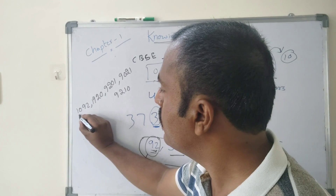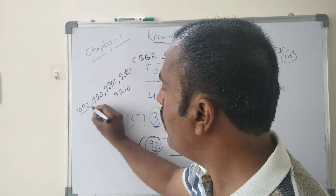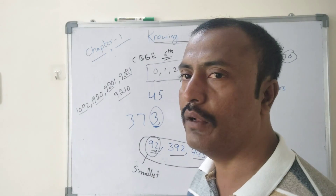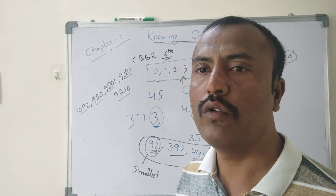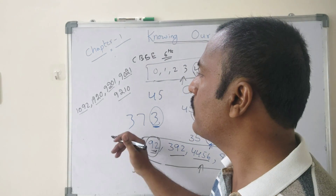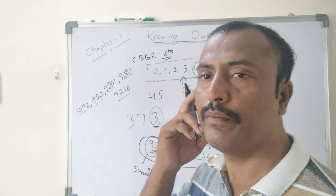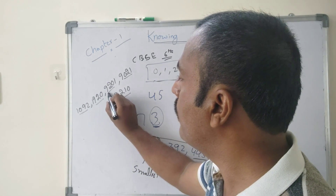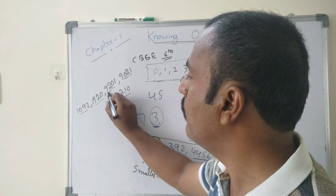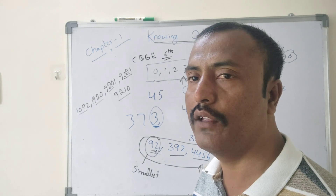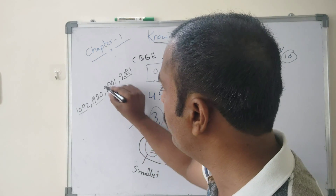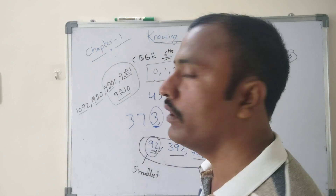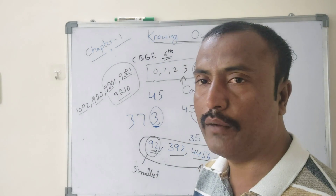Here, 1092, 1920, 920, and 921 — all numbers having only 4 digits. In that case, we compare the highest value on the 1000th place. Whichever has the highest value at the 1000th place is the biggest number.